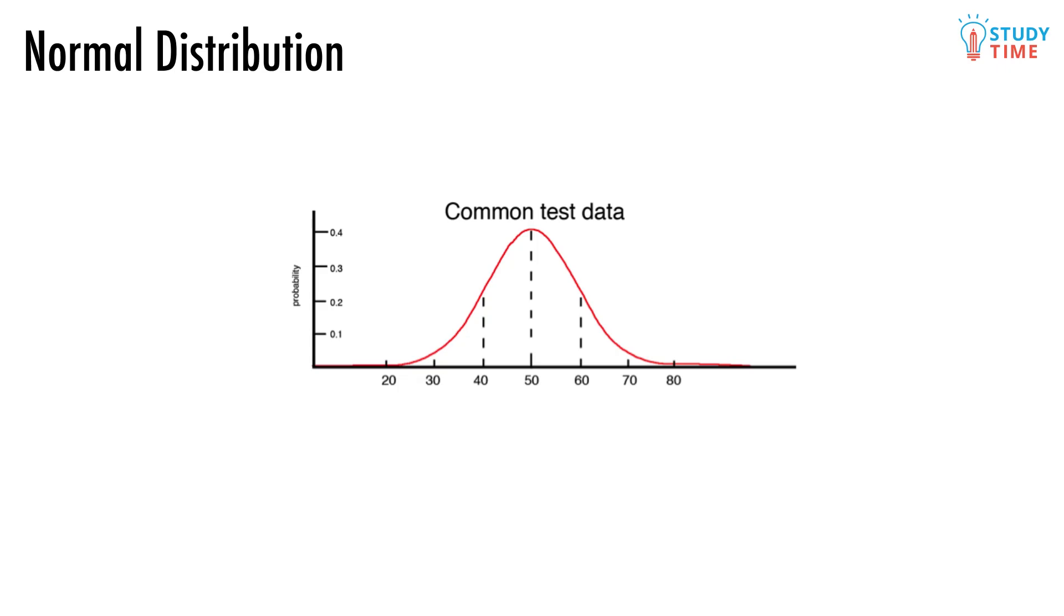You'd also probably find that as the marks got higher and higher above 50, and lower and lower below 50, there would be fewer and fewer people. What we've just described to you is data that is normally distributed.